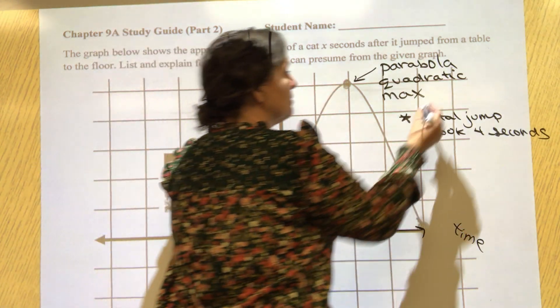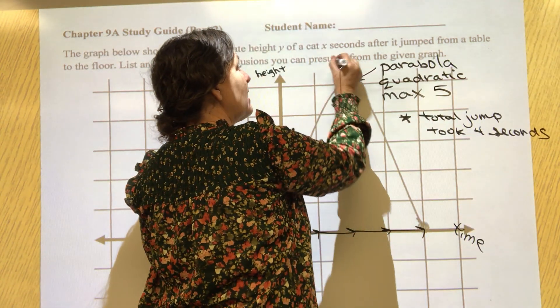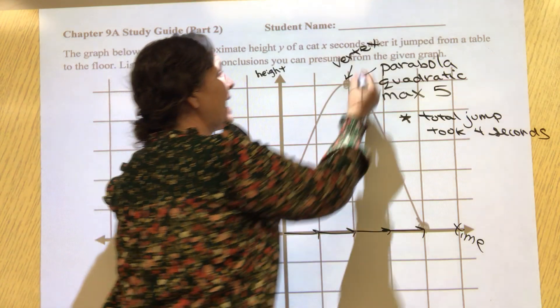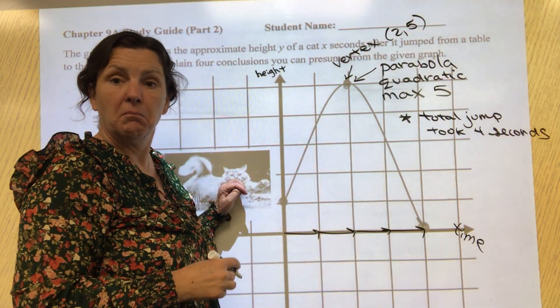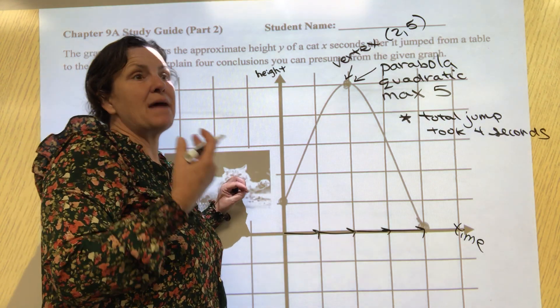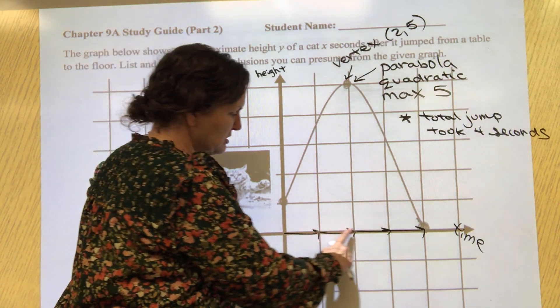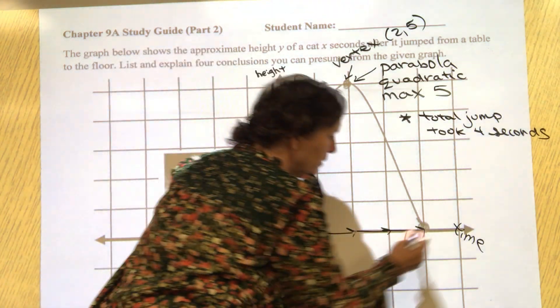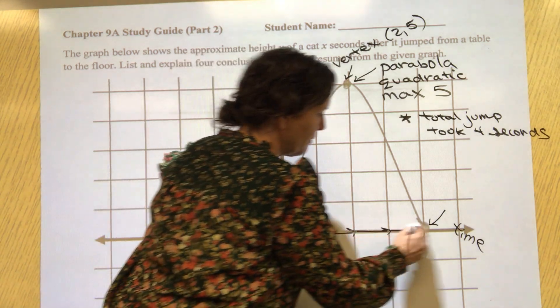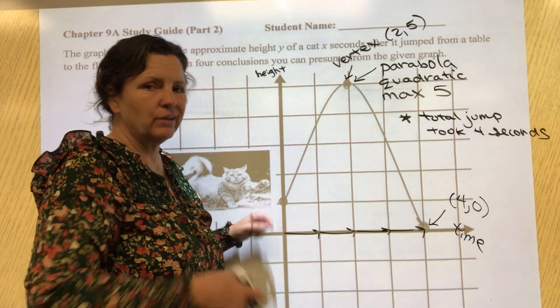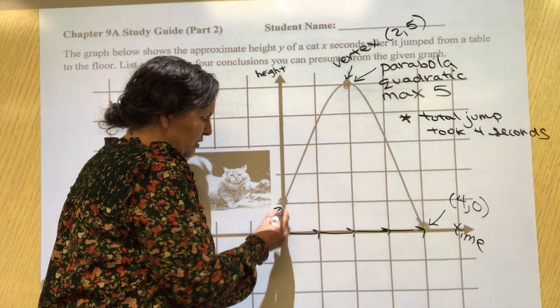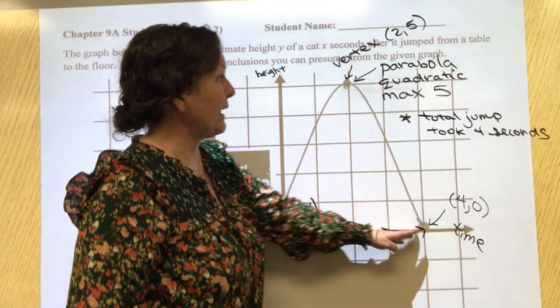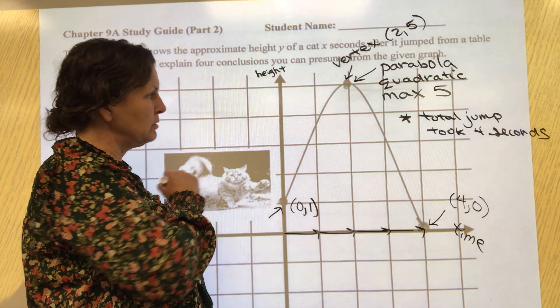You could tell me it has a vertex. At two seconds the cat was at a maximum height of five. You could say something like the cat was at his maximum height in two seconds. You could share where the landing point was, which was (4,0) - the cat landed at (4,0). You can't just say (4,0), you have to tell me what it means. You could say the cat started at (0,1) - the start point was (0,1), the table was located at point (0,1), the landing point or the floor was at (4,0).